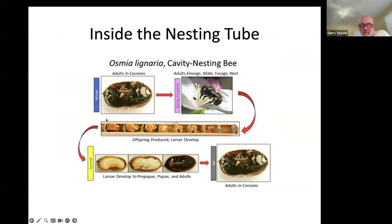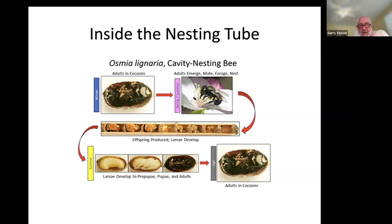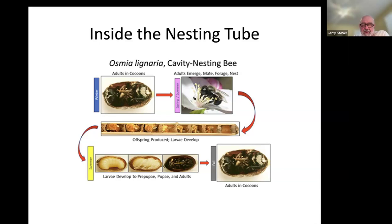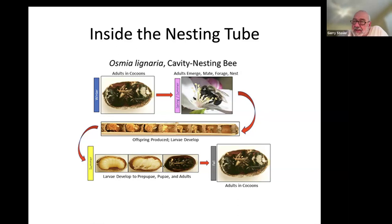This nesting cavity diagram shows the 6-inch minimum. The female caps one end, then starts putting eggs in with bee bread — that's the food source — and plugs between each egg. Towards the last couple of positions she'll put males, who dig themselves out first, and then the females dig their way out of the tube.